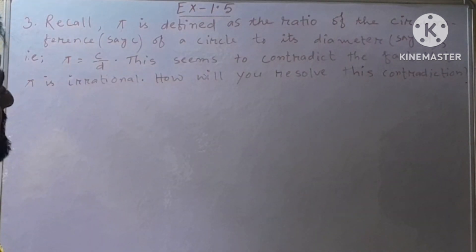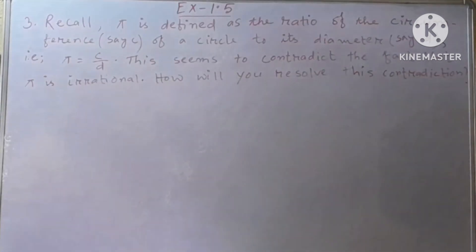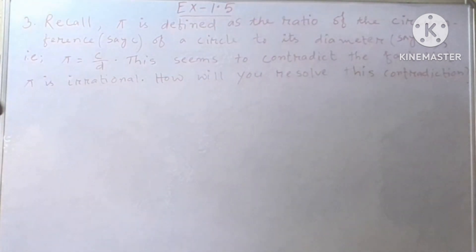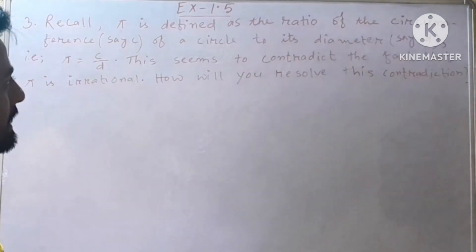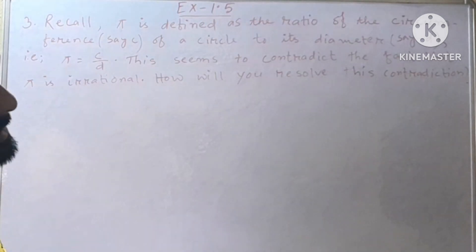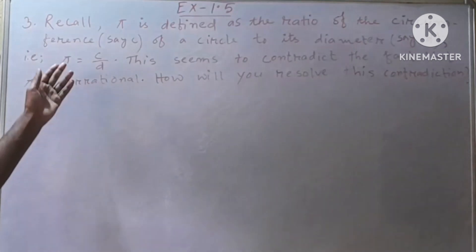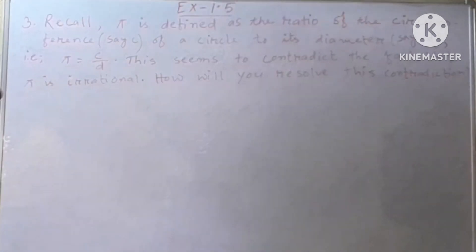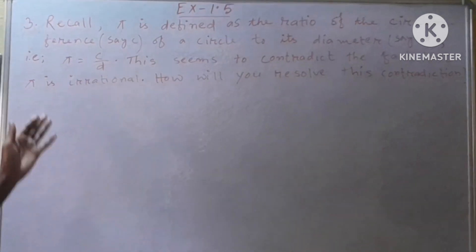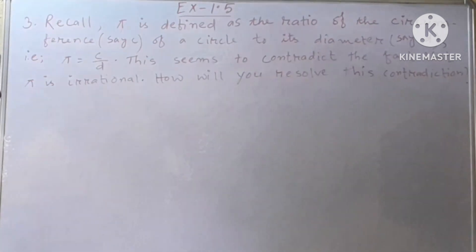This question says: recall, pi is defined as the ratio of the circumference, denoted by c, of a circle to its diameter, denoted by d. That is, pi is equal to c by d. This seems to contradict the fact that pi is an irrational number. Then the question is: how will you resolve this contradiction?